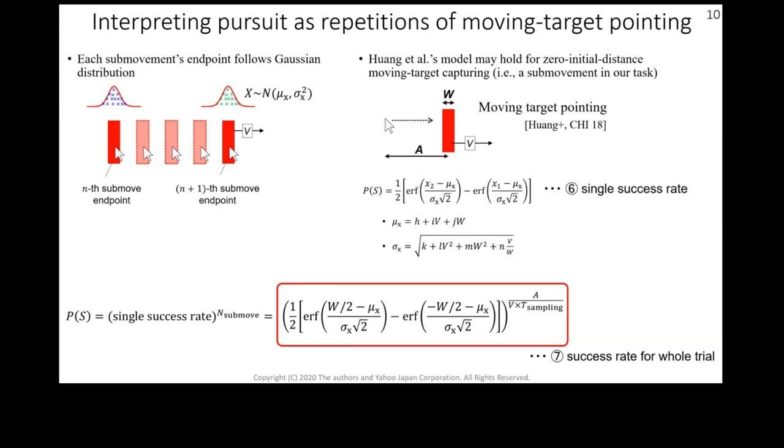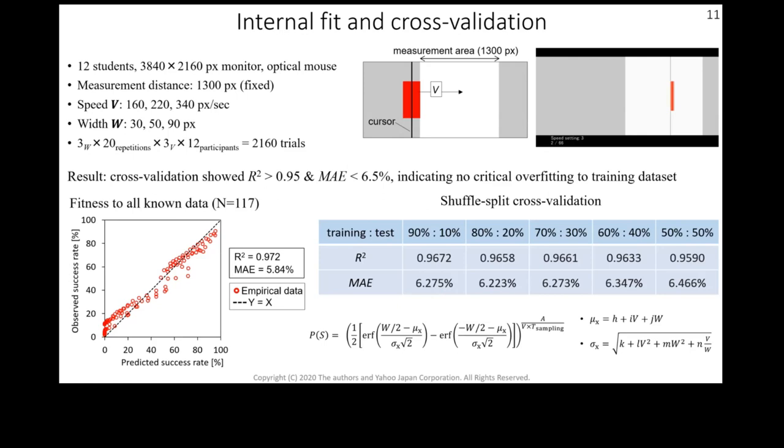In study 2, we tested three target speeds V and three target widths W. The result shows that when we use all data points, the R squared is 0.972 and the mean absolute error is about 6%.